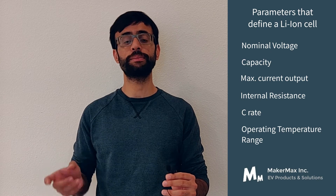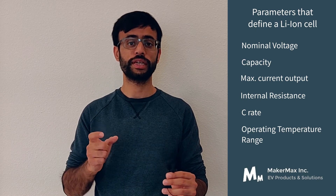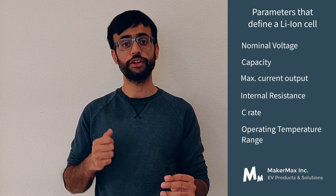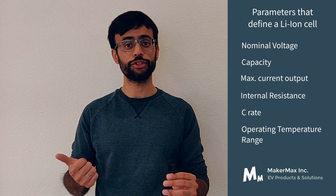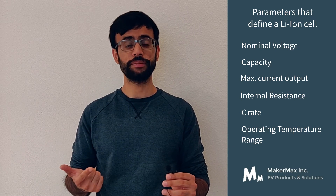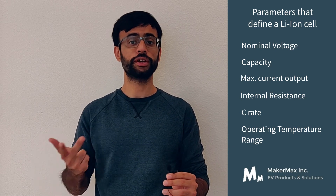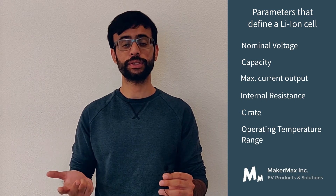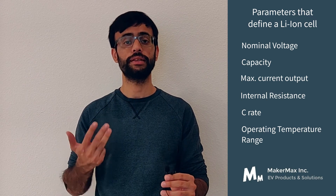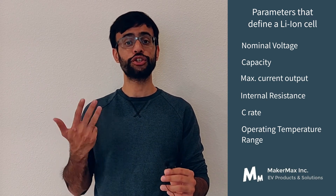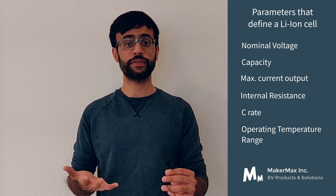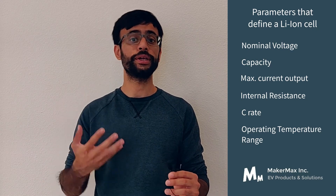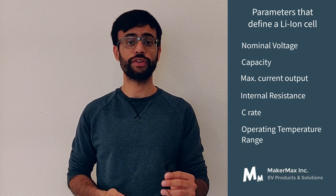Today we covered the parameters that define a lithium-ion cell: nominal voltage, the capacity of a cell, current throughput — both maximum instantaneous and continuous — the C-rate, internal resistance, and finally the operating temperature range.